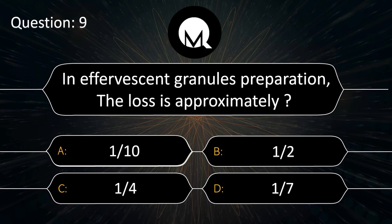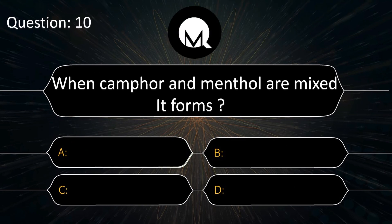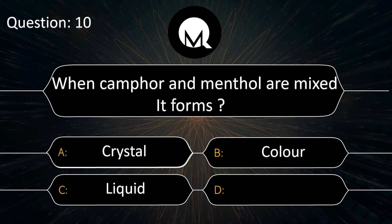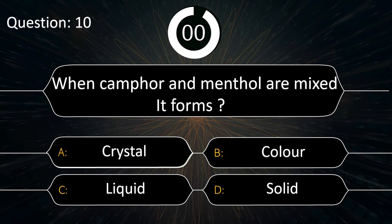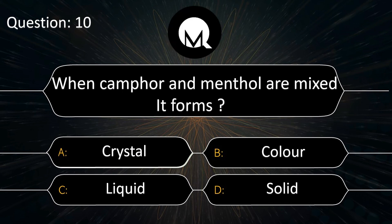When camphor and menthol are mixed, it forms: crystal, colored liquid, or solid? Answer is liquid.